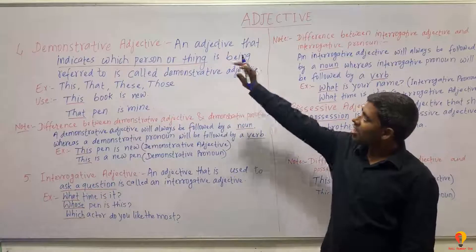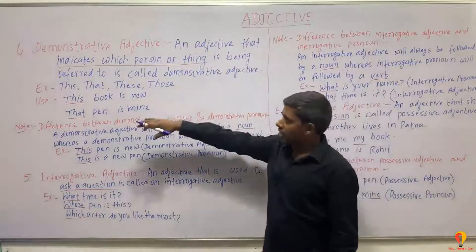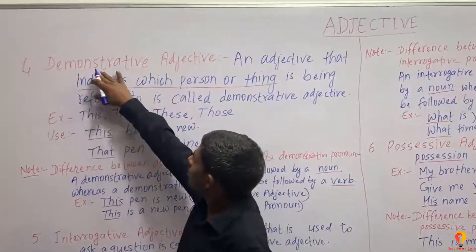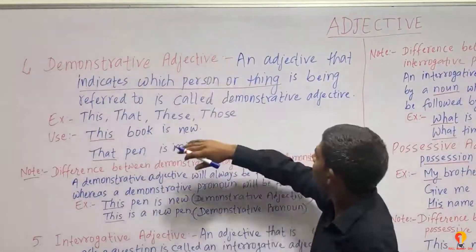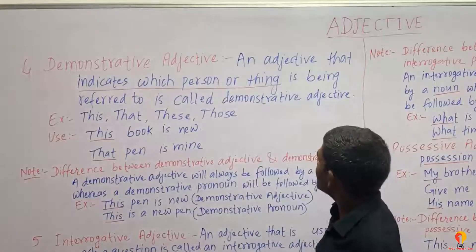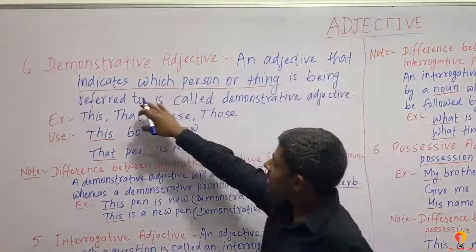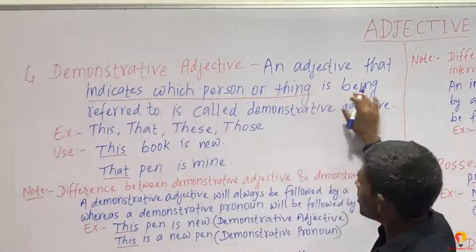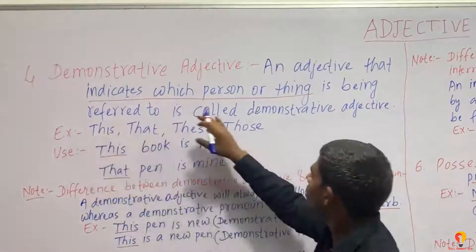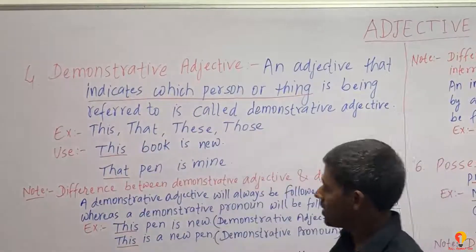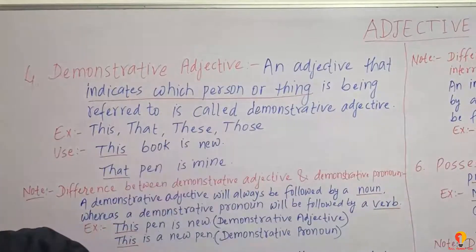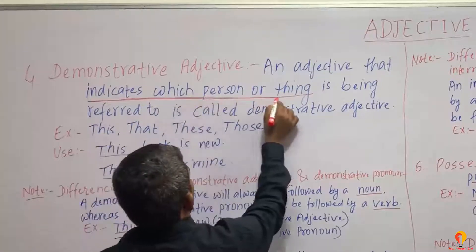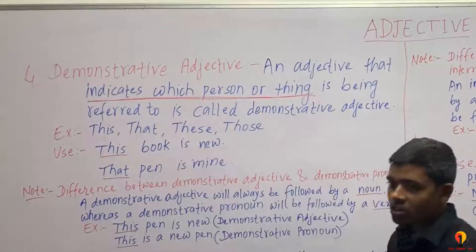Hello friends. We are going to talk about an adjective that indicates which person or thing is being referred to. It is called a Demonstrative Adjective. It indicates this person or thing — you see, it is used to indicate a person or thing.